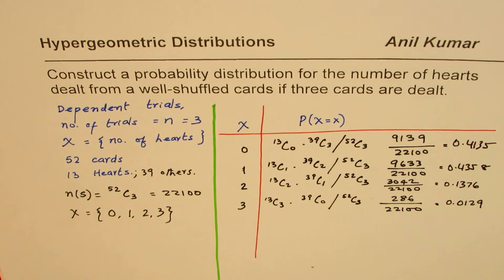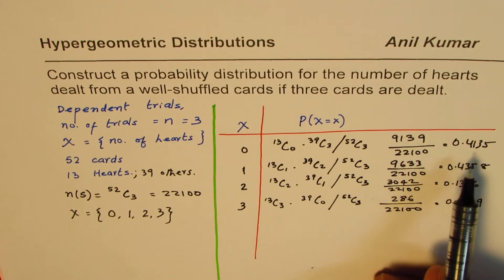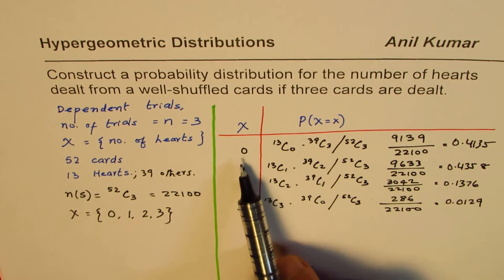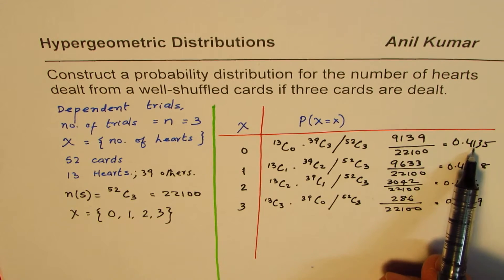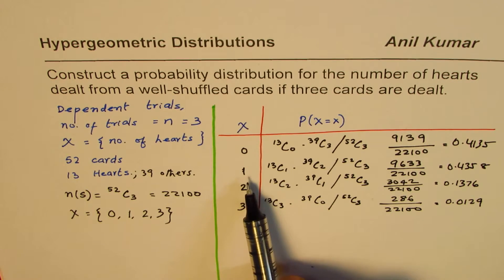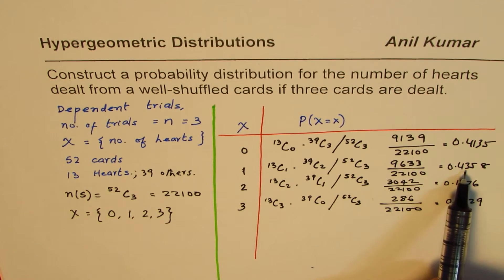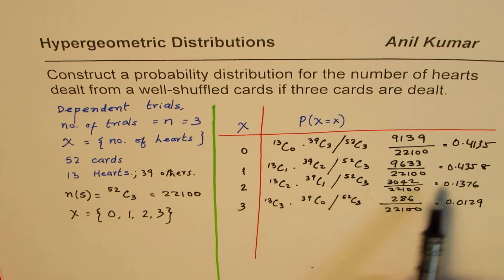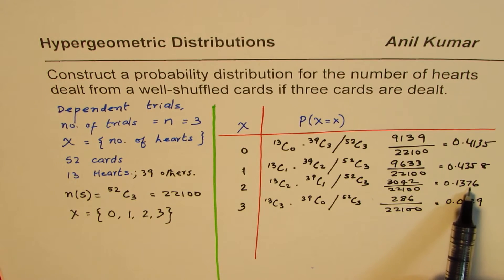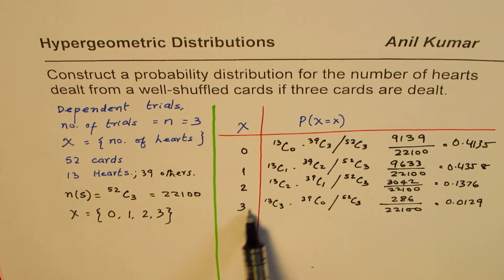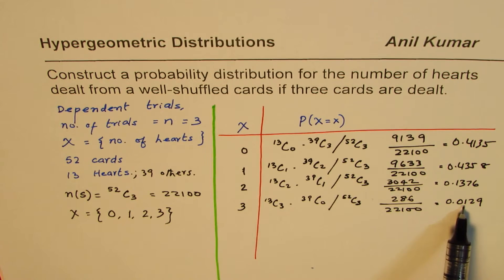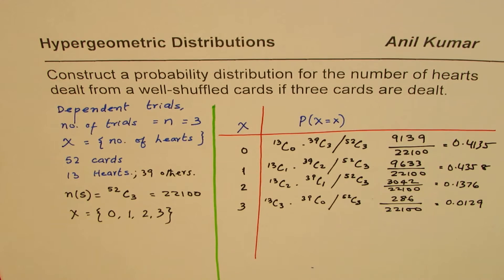So the probability distribution shows: the probability of getting 0 hearts is about 41%, the probability of getting 1 heart when 3 cards are dealt is about 43% — slightly higher. For 2 hearts it is about 13-14%, and for 3 hearts it is just 1%.